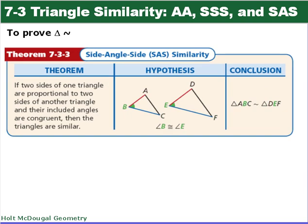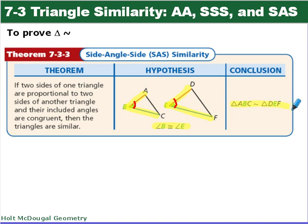Our last one is side-angle-side: if two sides of one triangle are proportional to two sides of another, and their included angles are congruent, then the triangles are similar. So AB is proportional to DE, BC is proportional to EF, and the included angle — the angle between those two proportional sides — angle B is congruent to angle E, so triangle ABC is similar to triangle DEF.